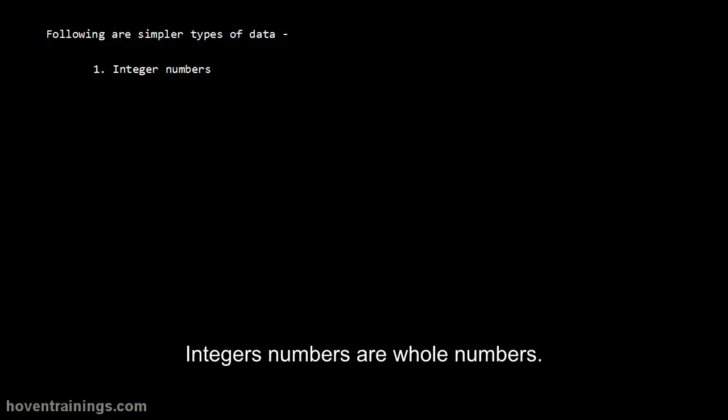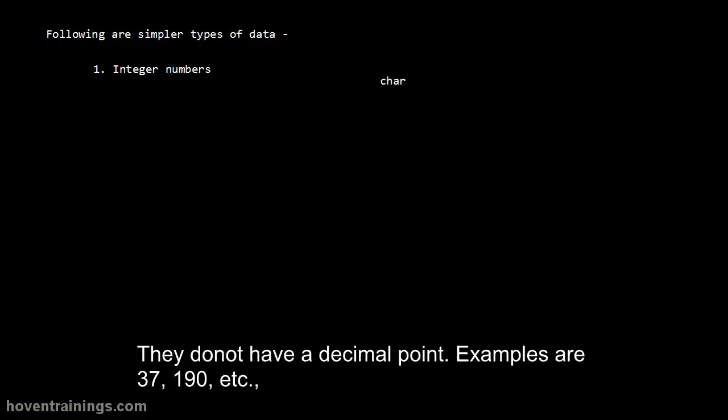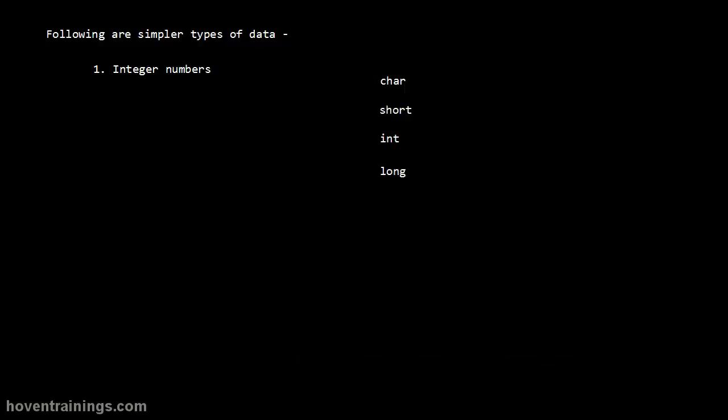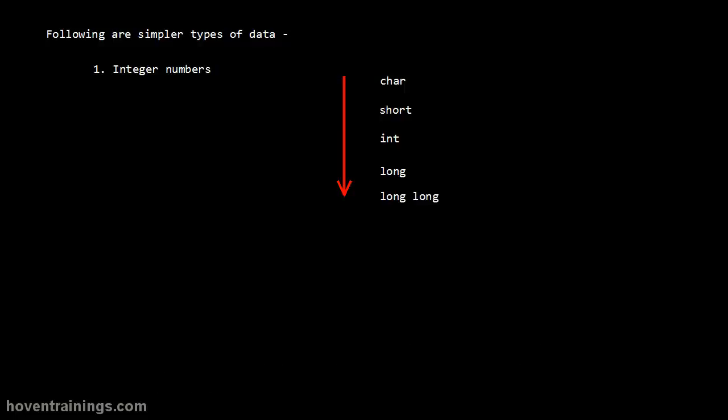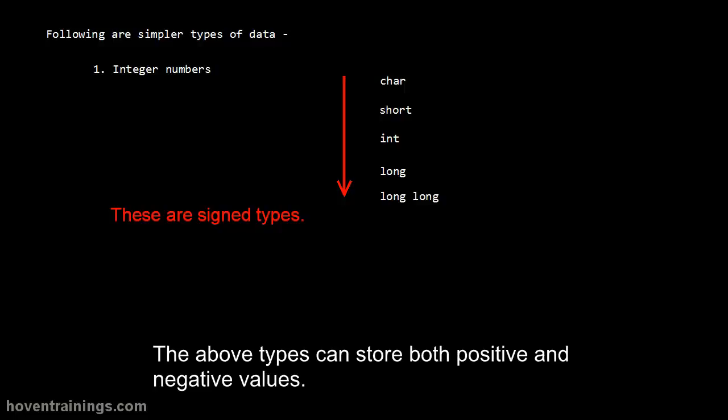Integer numbers are whole numbers. They do not have a decimal point. Examples are 37, 190, etc. They can be represented by different data types of C. This is the increasing order of their capacities. The char can store 256 values, the short can store 65,536 values. The above types can store both positive and negative values.